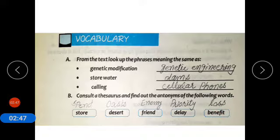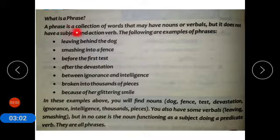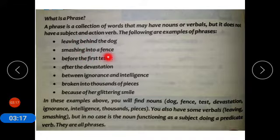Now we will discuss what is a phrase. A phrase is a collection of words that may have nouns or verbals, but it does not have a subject and an action verb. Examples of phrases: leaving behind the dog, smashing into a fence, before the first test, after devastation, between ignorance and intelligence, broken into thousands of pieces, because of her glittering smile.